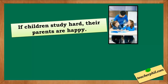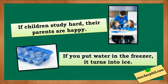If children study hard, their parents are happy. If you put water in the freezer, it turns into ice. The IF clauses here are 'if children study hard' and 'if you put water in the freezer.' The RESULT clauses are 'their parents are happy' and 'it turns into ice.' All these examples are facts — the results always happen when the previously mentioned actions are done. That's why both the IF clauses and the RESULT clauses are in simple present tense.